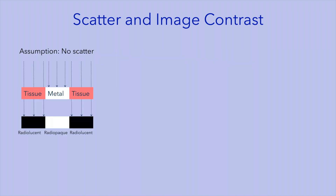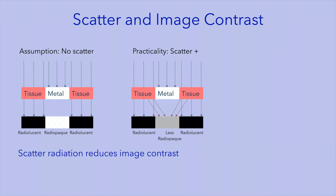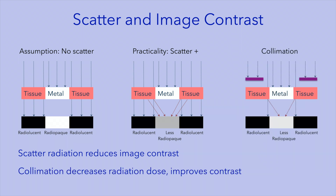Let's consider the influence of scatter. We will image an interface between soft tissue and metal to provide a high contrast image. Assuming no scatter, this would yield an image with high contrast — the metal is radiopaque and the tissue is radiolucent. However, in practice there is scatter. The scattered radiation from the tissue reaches the detector and makes the area under the metal less radiopaque. In other words, scattered radiation reduces image contrast. We cannot completely eliminate scatter, but we can minimize the amount produced and the amount that reaches the detector.